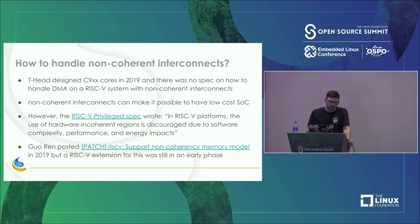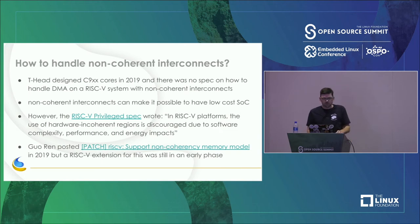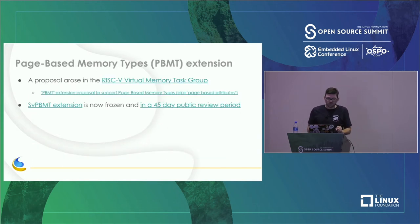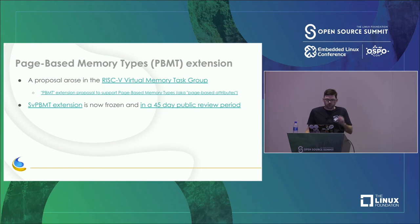Gao Ren did post about this back in 2019, but the extension for handling it was still in an early phase. What happened in the meantime was the page-based memory types (PBMT) extension came out of the virtual memory task group. Similar to ARM, this lets us describe for a page whether it's normal memory, cacheable memory, or I/O memory — something RISC-V didn't have until this extension was proposed. This extension has now been frozen and put into a 45-day public review period, also ending on Halloween.